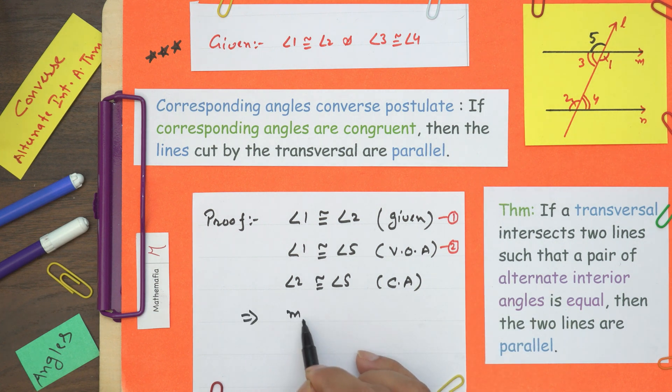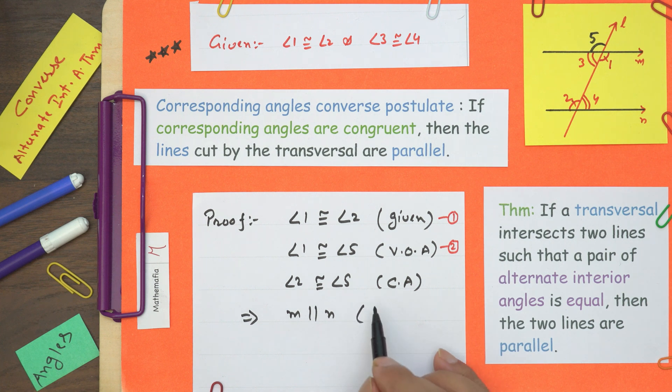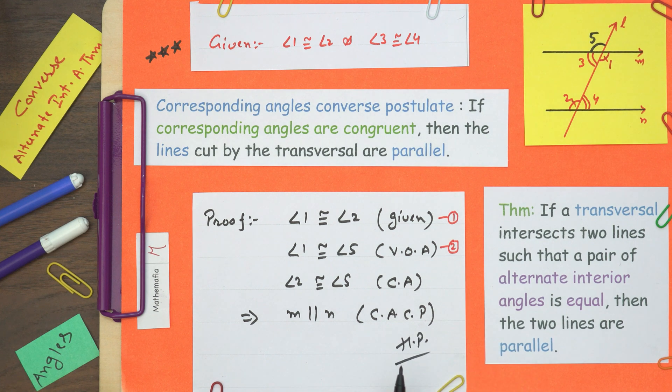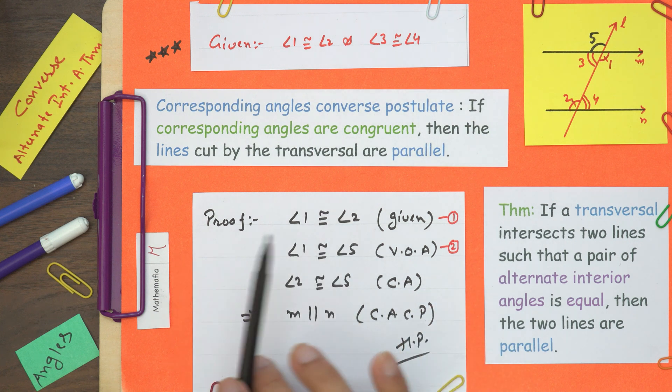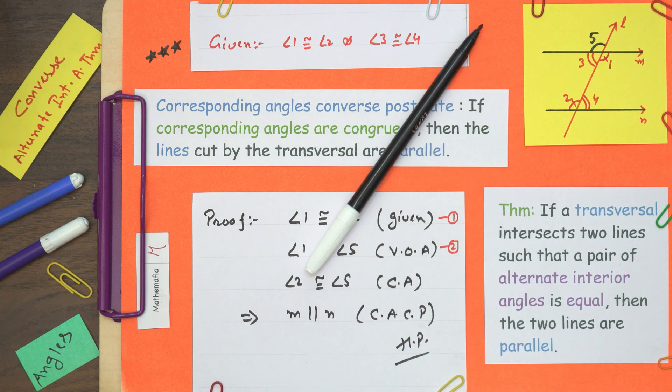So this implies M is parallel to N. Why? Because of the corresponding angles converse postulate. Hence proved. That's it from this tutorial. It was a very simple theorem to prove. Keep watching Mathemafia.